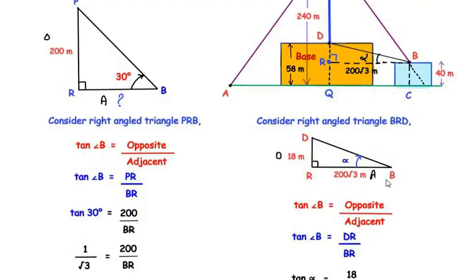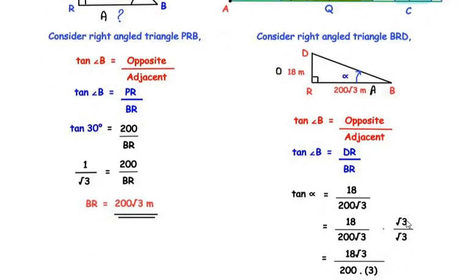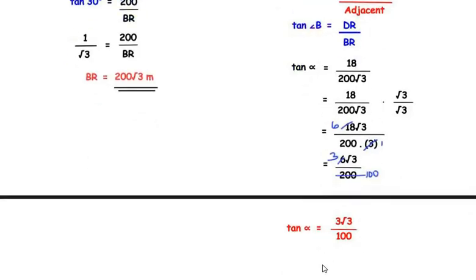tan(∠B) = opposite/adjacent = DR/BR. Angle B is α, so tan α = 18/(200√3). Rationalizing by multiplying numerator and denominator by √3: tan α = 18√3/(200 × 3) = 18√3/600. Simplifying: 3 divides 18 giving 6, so 6√3/200. Then dividing by 2: tan α = 3√3/100. This is the answer.